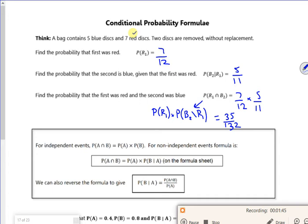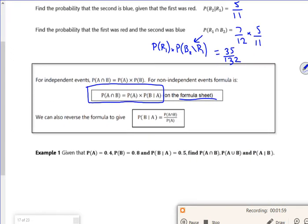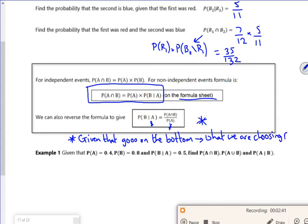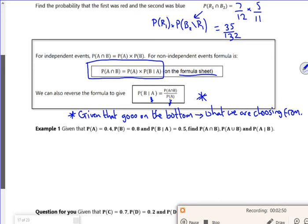So the conditional probability formula is given here. Now that's how it is on the formula sheet. I tend to write it like this but also, I've got to be really careful here. Whatever the given that is goes on the bottom because that's what I'm choosing out of. So in the formula you've got to be really careful. The given that goes on the bottom because that's what you're choosing from.